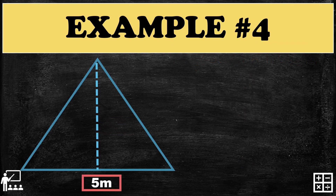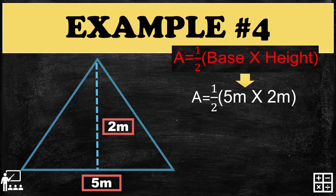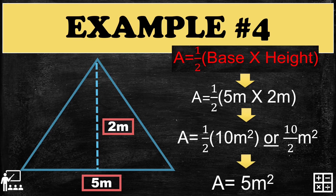Example number 4 has a base of 5 meters and a height of 2 meters. Just use the formula and substitute the measurements. First multiply 5 times 2, which gives you 10. Then 10 divided by 2 gives you 5 meters squared.